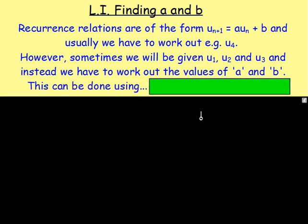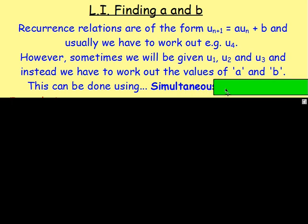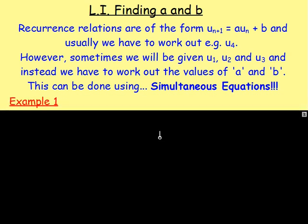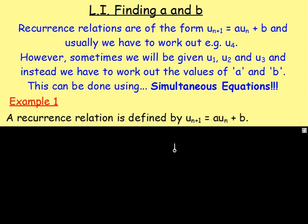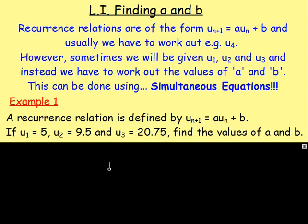And to do this, what we want to do is look back to something that everybody loves — and I know Ava is the master of these — and it is simultaneous equations. So, example number one. A recurrence relation is defined by U(n+1) equals A·U(n) plus B. Let's say U1 equals 5, U2 equals 9.5, and U3 equals 20.75. Find the values of A and B in this recurrence relation.